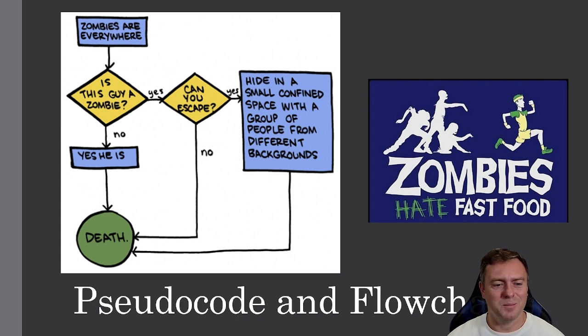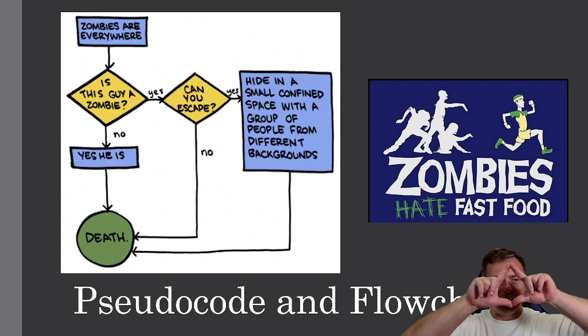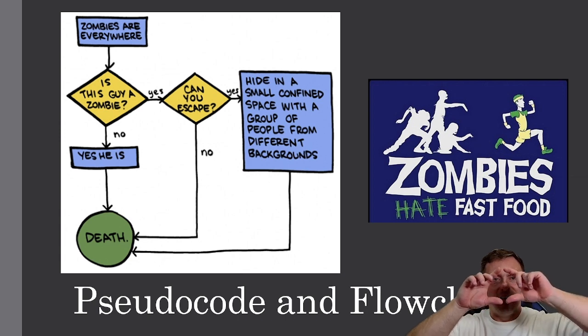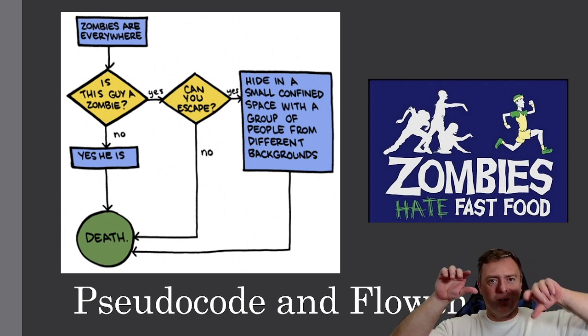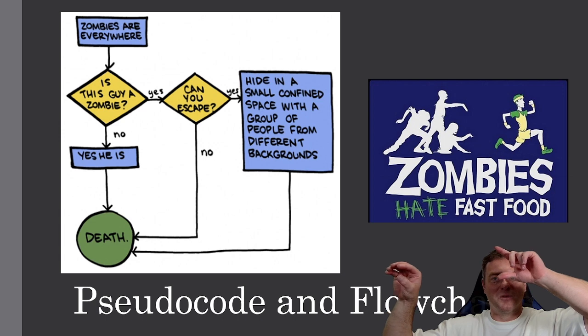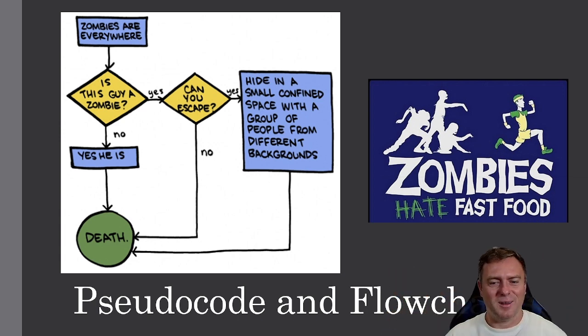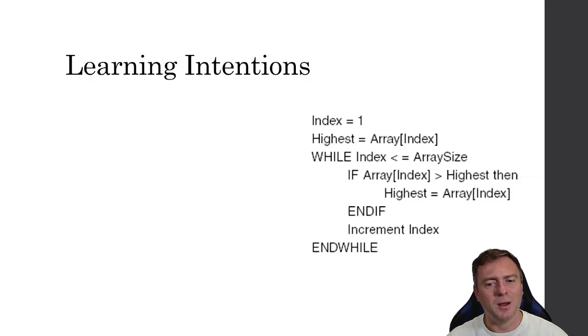To start I've got a bit of a bad flowchart zombie joke here. So basically there's zombies everywhere. A question's been asked with the diamond. So is this guy a zombie? And if it's yes you can escape. If it's no yes he is and then you die. If you can escape no well you die. And then if it's yes you hide in a small confined space with a group of people from different backgrounds and you still end up meeting a bad fate. So this is basically how a flowchart sort of looks.